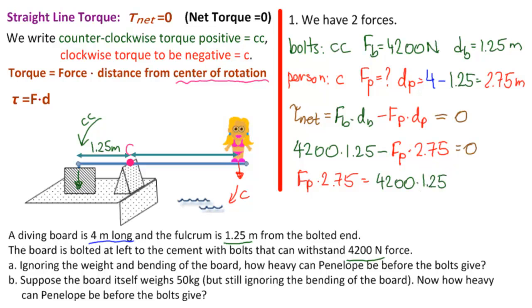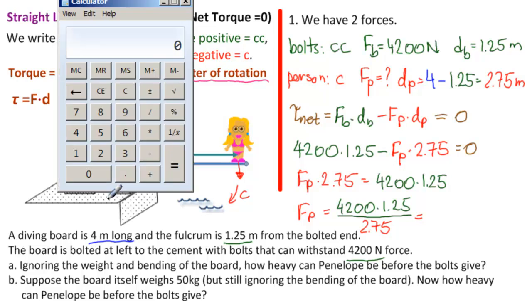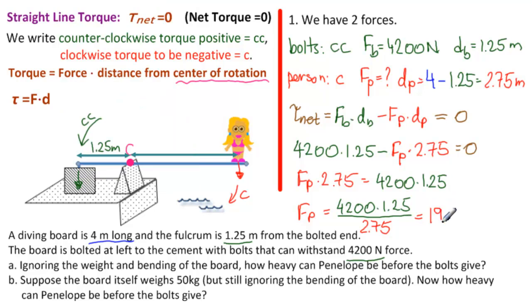So, F_P equals 4,200 times 1.25 divided by 2.75. Let's calculate that. 4,200 times 1.25 divided by 2.75. That's 1,909.1 newtons.